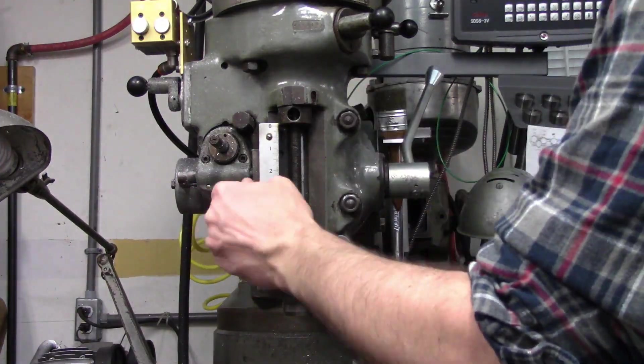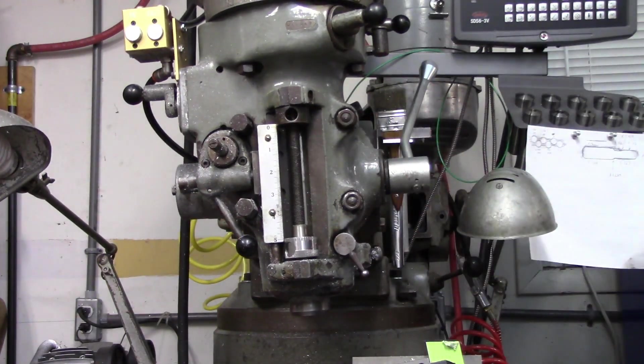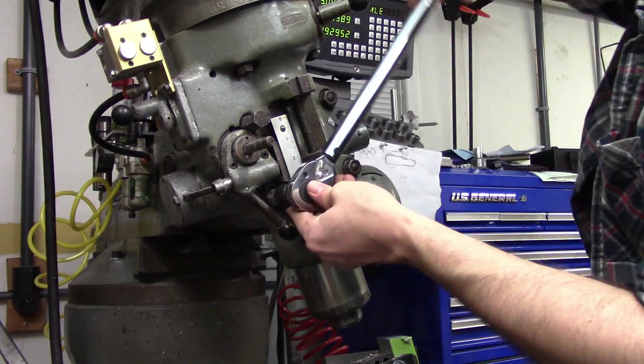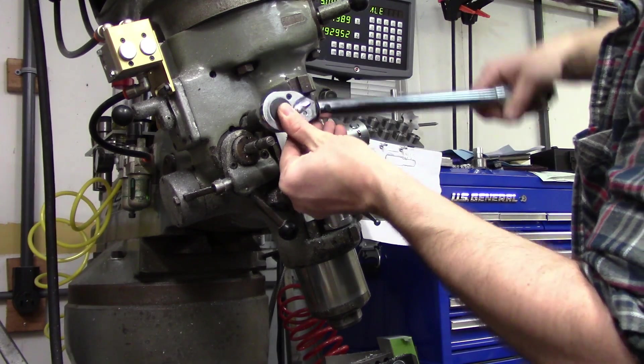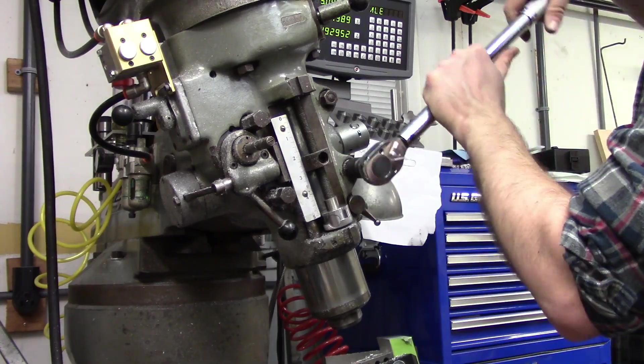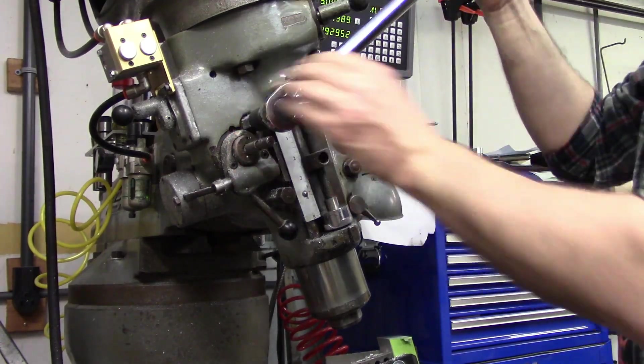The next step is to angle the head of the mill. The angle needs to be twenty degrees plus or minus two degrees. That's a lot of leeway so I'm just using the degree markings on the head. If it needed to be closer than that, I would, again, use a sine bar and tram the head to the surface of the bar.